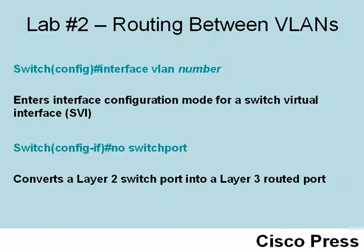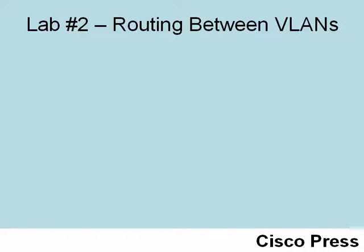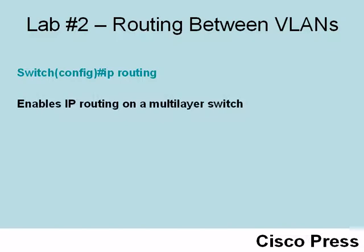Something else we need to be aware of on this Catalyst 3550: by default, IP routing is not enabled. We will not be allowed to enter router configuration mode for EIGRP until we first issue 'ip routing' in global configuration mode. That command enables the IP routing process on this multi-layer switch.